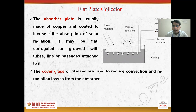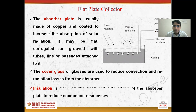Cover glasses are used to reduce the convection and re-radiation losses from the absorber. Insulation is used on the back and side edges of the absorber plate to reduce conduction heat losses.